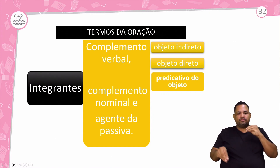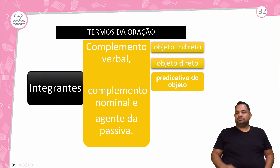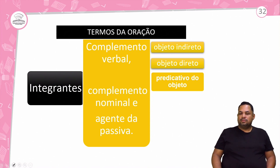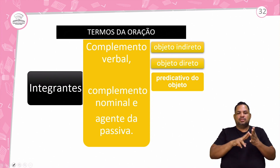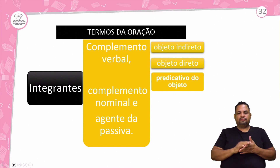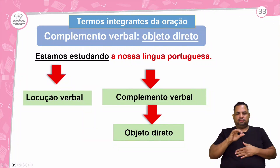Olha só, quem vai fazer parte do complemento verbal? O objeto — o objeto direto e o objeto indireto. E o complemento nominal? Aquele que vai completar o sentido do nome. E o agente da passiva é aquele que vai fazer a ação na voz passiva analítica.